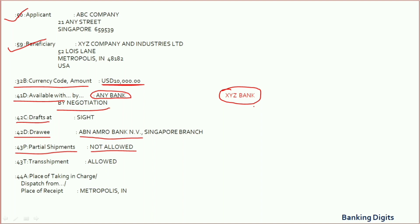Field 43T states whether transshipment is allowed or not. Transshipment means unloading from one means of conveyance to another means of conveyance. You may refer to my explanation on Article 19 of UCP for better clarification about transshipment, as a full explanation here would make this video too long.